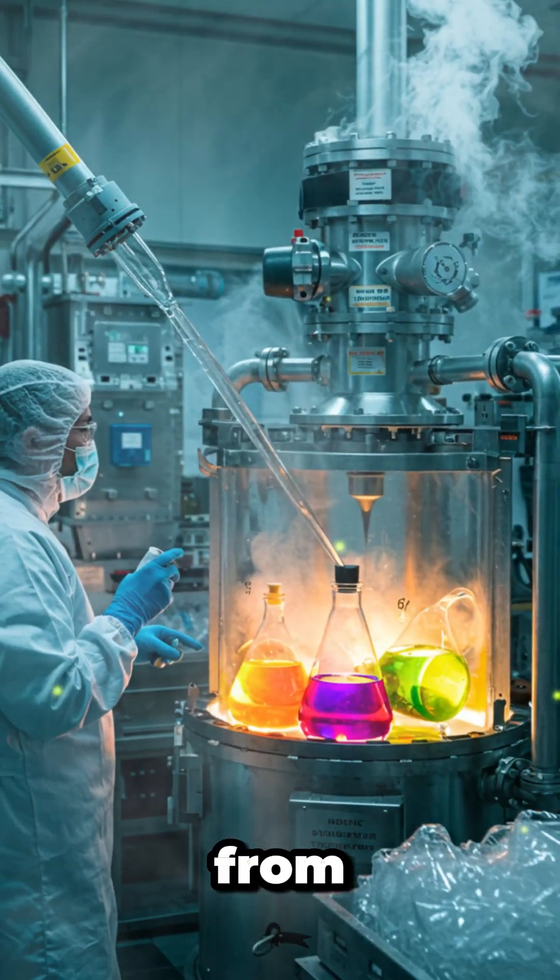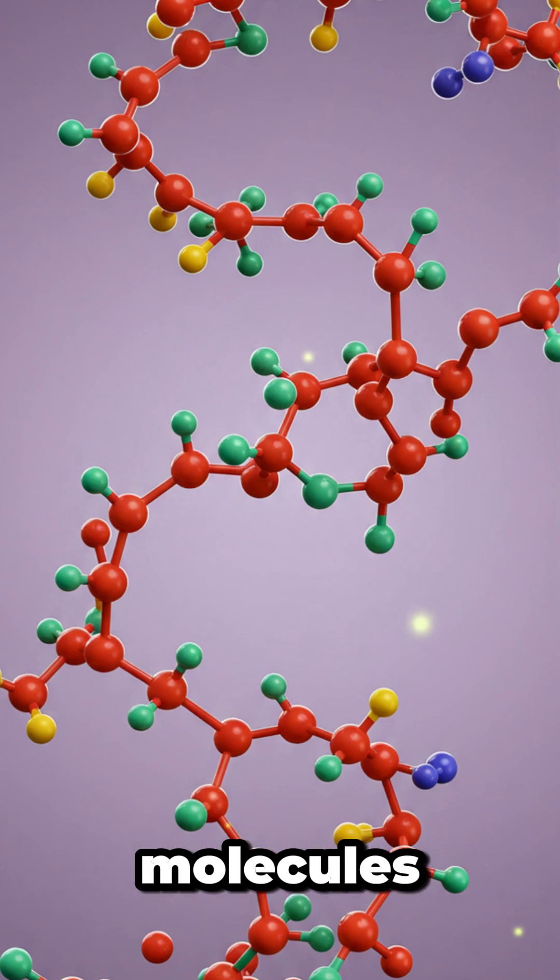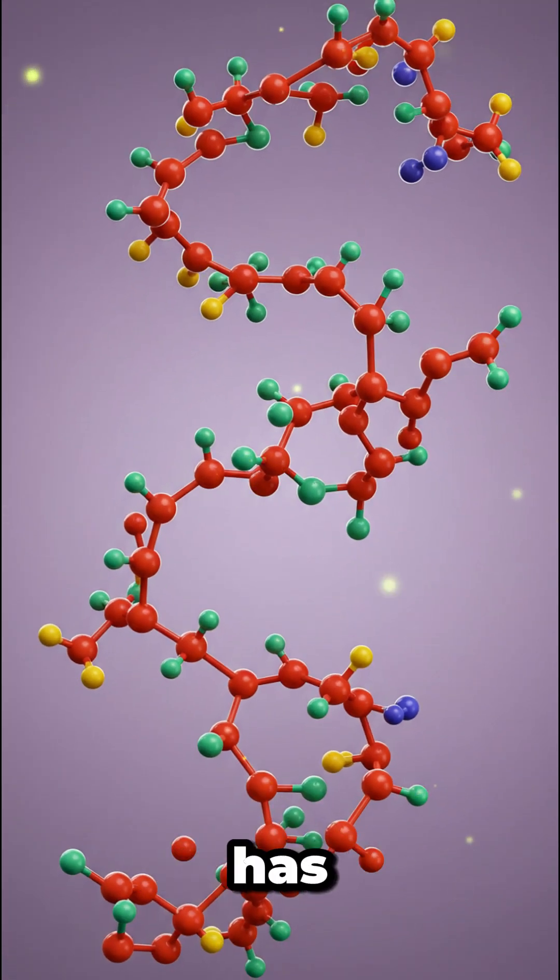Plastics come from oil through a process called polymerization - small molecules join to form long chains. PVC has chains from 70 to a million molecules long.